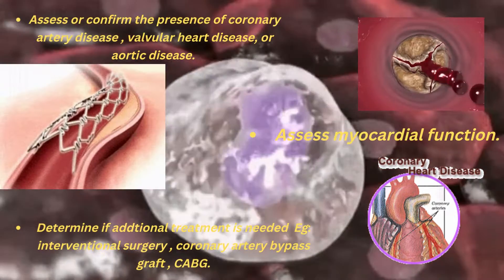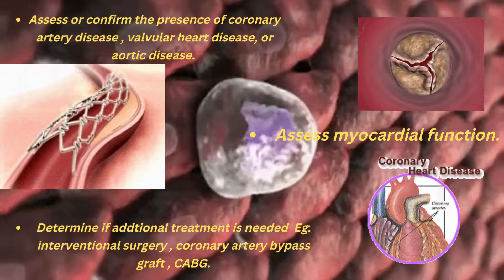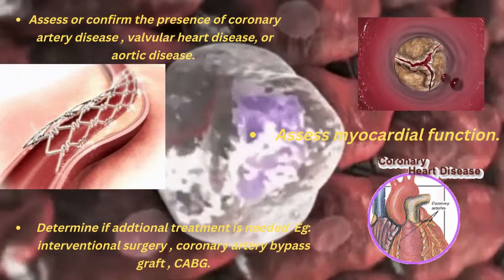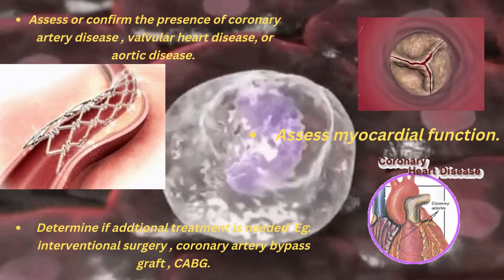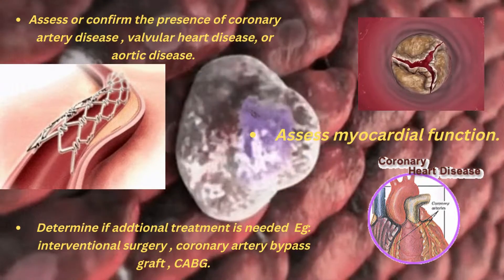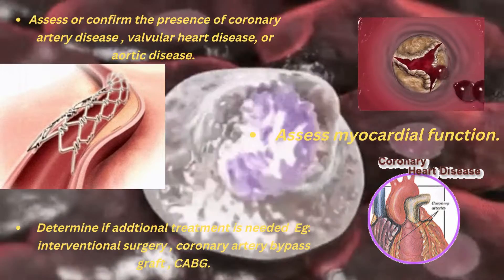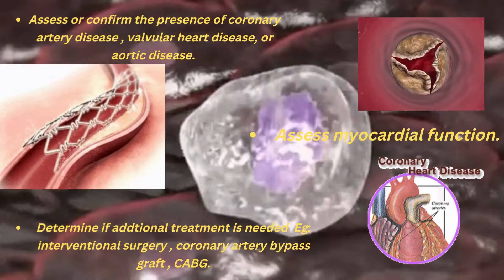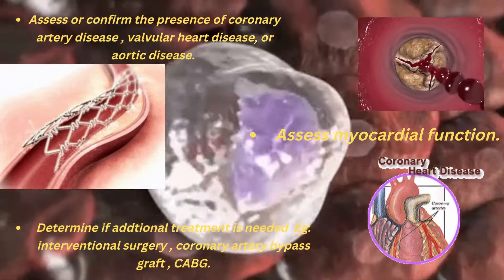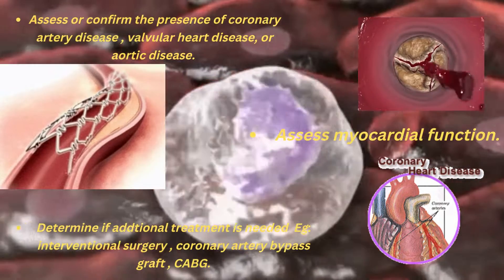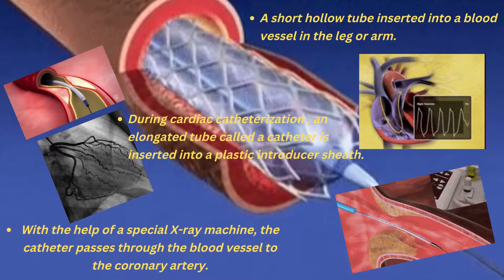Let's think about why cardiac catheterization is used. First, it is used to assess or confirm the presence of coronary artery diseases, valvular heart diseases, or aortic heart diseases. Second, it is used to assess myocardial functions. Third, it is used to determine if additional treatment is needed — for example, interventional surgery, or coronary artery bypass graft, also known as CABG.